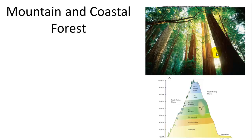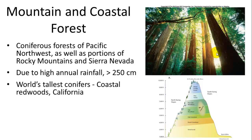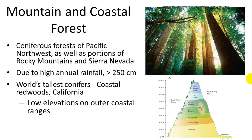Mountain and coastal forests are similar to deciduous forests, but are generally dominated by gymnosperms. They are found in the Pacific Northwest as well as portions of the Rocky Mountains and Sierra Nevadas, and they have high annual rainfall and other forms of condensation and precipitation. The world's tallest conifers are found in the coastal redwoods in California and the giant sequoias of central California and the northwestern United States. They can also be found at low elevations on outer coastal ranges, where they depend on fog for their hydration requirements.